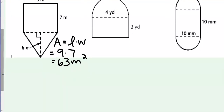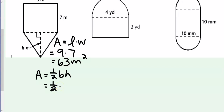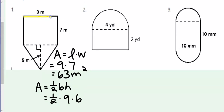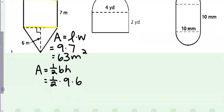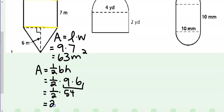The formula for a triangle is area equals one-half base times height. One-half the base is 9 and the height is 6, knowing that we get the base from this line up top. So then we simply multiply 9 times 6, which is 54, and we take half of that, which is going to give us 27 square meters.